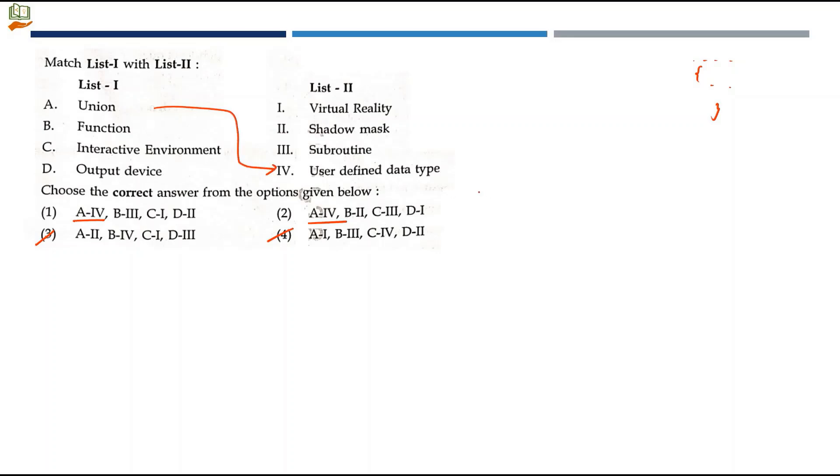What about function? Function is a set of statements that does some task. What is subroutine? It has the same meaning. Function maps to subroutine, B3. We can rule out option two. Option number one will be the right answer. Virtual reality is a computer generated environment with scenes and objects that appear to be real, making the user feel they are immersed in their surroundings. You see people playing games in VR scenario. Since we have scenes and objects that appear real, the user interacts with the environment. Only then you can be present in VR environment. We can mark interactive environment to virtual reality, C to 1.